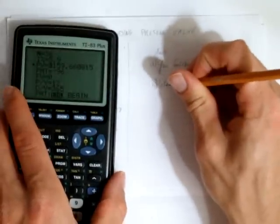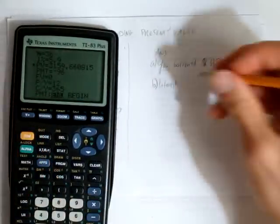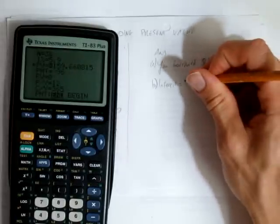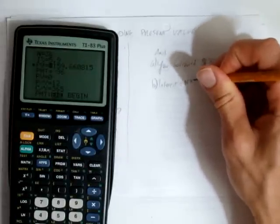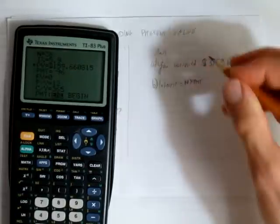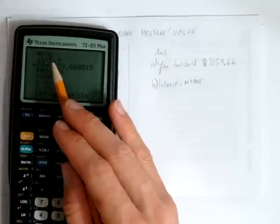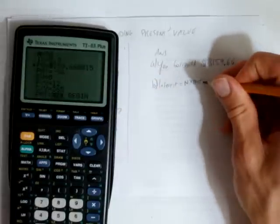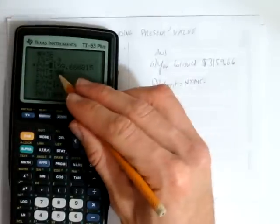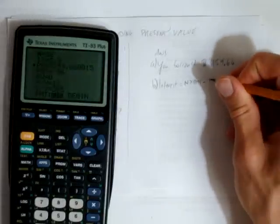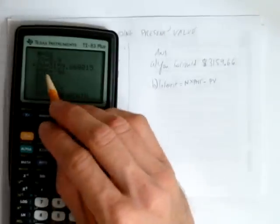Well, our interest is going to be calculated by taking how much we spent, and this is present value, so we do our N times our payment, because we're paying off the loan with a bunch of payments of $96, 36 times, and we subtract the amount of the loan. This was whatever we bought here, it originally cost PV, that's what we had to borrow from the bank or from the company,